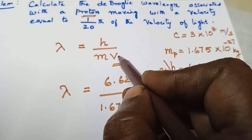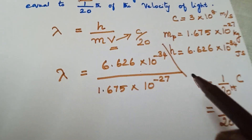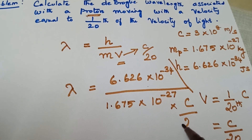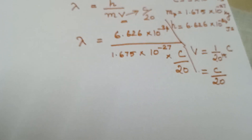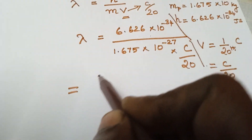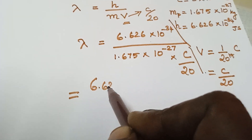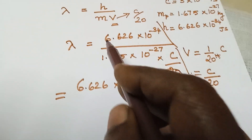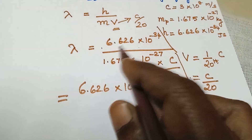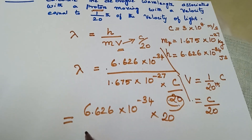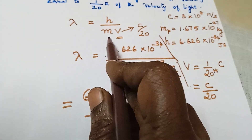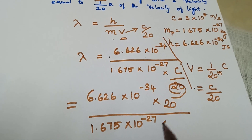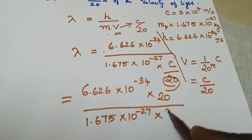Since V has to be replaced by C/20, the value of C divided by 20 is written here. Rewriting the formula: H is 6.626 × 10⁻³⁴, and the denominator of the denominator is taken to the numerator, so we have 20 in the numerator, divided by the mass of the proton 1.675 × 10⁻²⁷ and C is 3 × 10⁸.